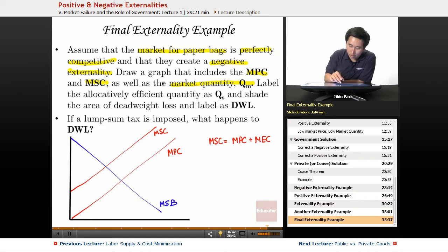Draw that includes MPC as well as the market quantity Qm. So marginal social benefit, the marginal social cost - this is the Qm. Doesn't say to necessarily label the Pm but it doesn't hurt to do that.